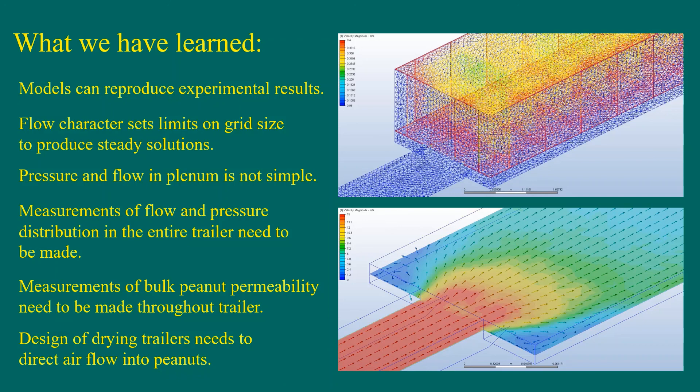What have we learned? Models can reproduce experimental results in peanut drying trailers. Flow character sets limits on the grid size to produce steady solutions. The pressure and flow velocity distributions in the plenum are not simple. Measurements of flow and pressure distributions in the entire trailer need to be made. Measurements of bulk peanut permeability need to be made throughout the trailer. Peanut drying trailers should be designed to direct the airflow into the peanuts.